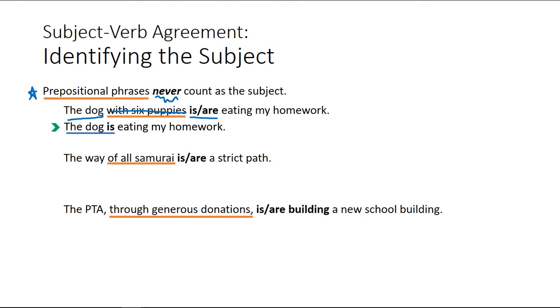Let's try another example. The way of all samurai is a strict path or the way of all samurai are a strict path. This could be difficult to tell what your subject is, but because you know you can eliminate the prepositional phrase, you can just jump here and find out this right here is the subject and it's singular. The way is a strict path versus the way are a strict path. This one reads much more smoothly and that is the correct answer. The way is a strict path.